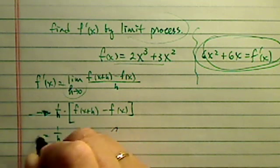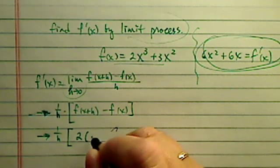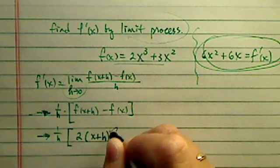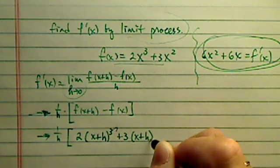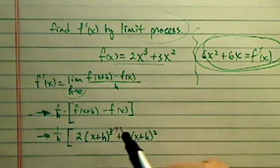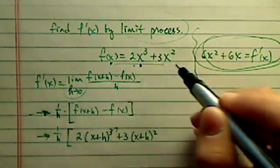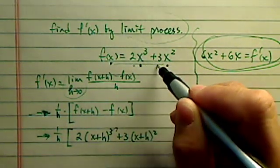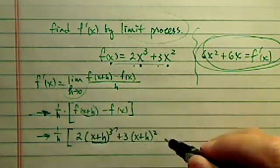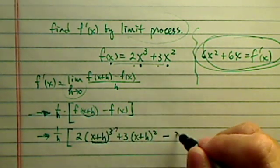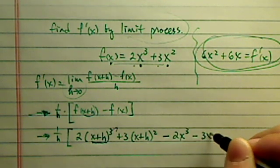That's 1 over h, f of x plus h, so I'm going to have to plug this one in there, cubed, plus 3 times x plus h squared. Because my f of x is saying whatever you gave me, I'm going to cube it times 2 plus squared times 3. So this is what I did. I was given x plus h, so I substitute in there. Now I'm going to subtract 2x cubed minus 3x squared.